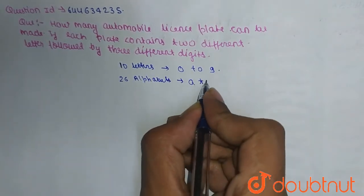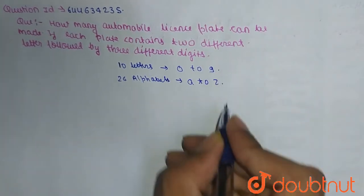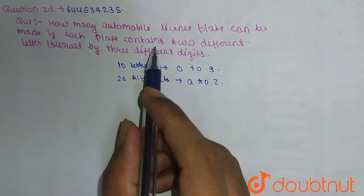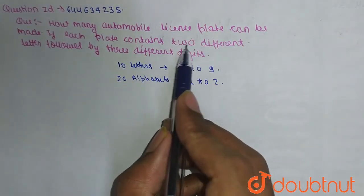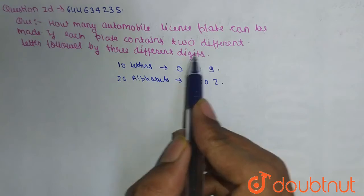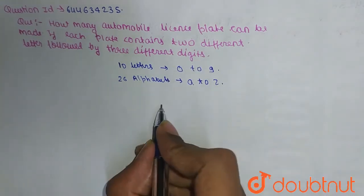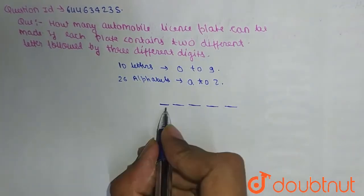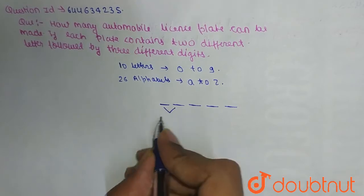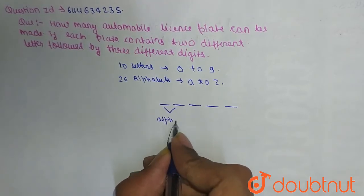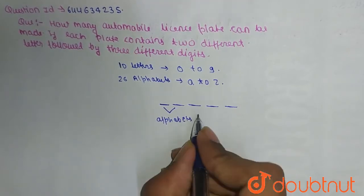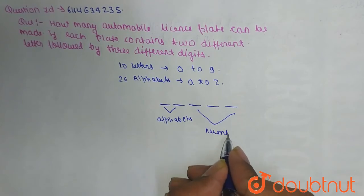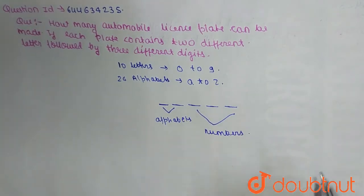Here we have given that there are two different letters followed by three different digits, meaning there are five total positions. Let's say these two are alphabets and the remaining three are numbers.